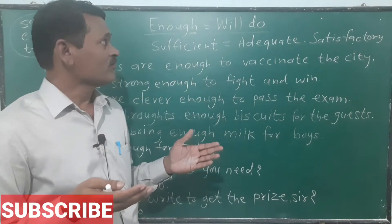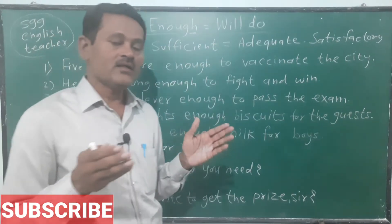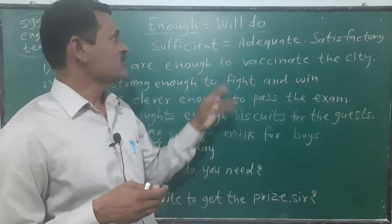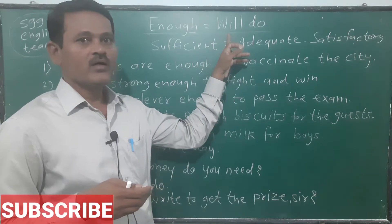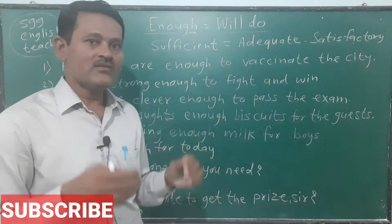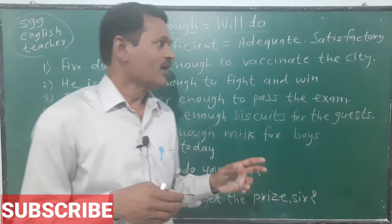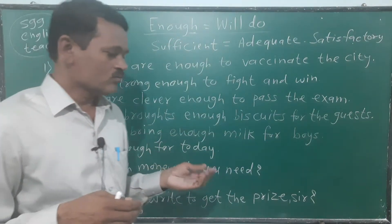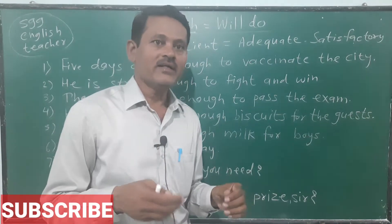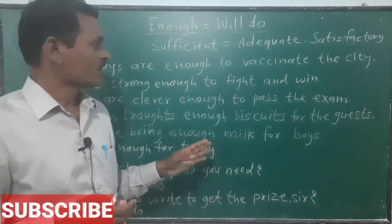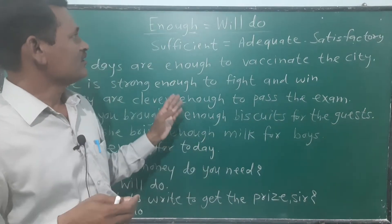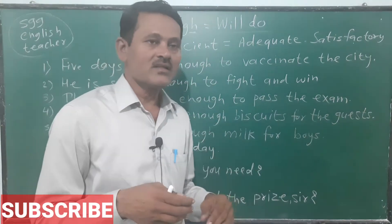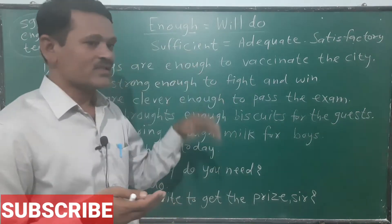But nowadays, sometimes, when we use informal English, that time we use 'will do.' Will do is frequently used nowadays and can also be used in written English. So let us see what is enough and what is will do — what is the difference and how to use all these words.